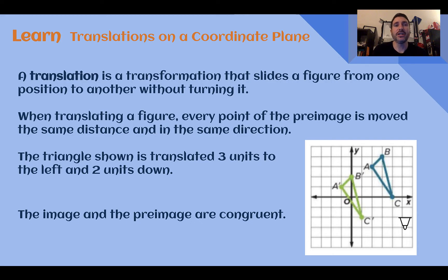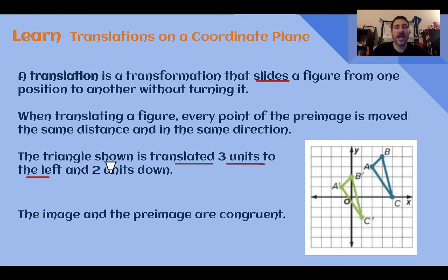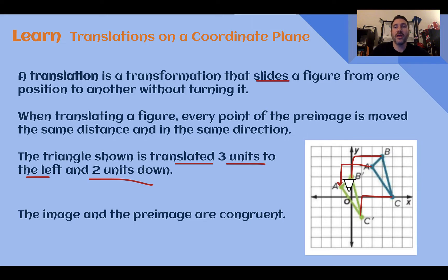Let's learn: Translations on a coordinate plane. A translation is a transformation that slides a figure from one position to another without turning it — so a translation is a slide. When you're translating a figure, every point from the pre-image is moved the same distance and in the same direction. Here we can see a triangle — the one without apostrophes is our original pre-image — and it was translated three units to the left and two units down. All of the points followed that same pattern, and the image and pre-image are congruent: the same shape and size.